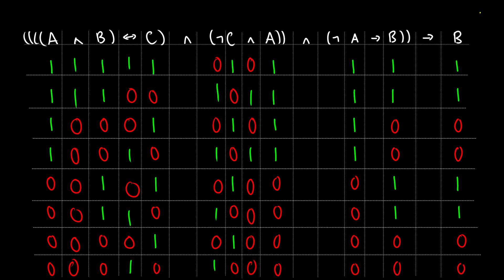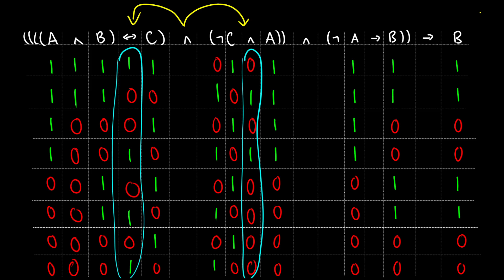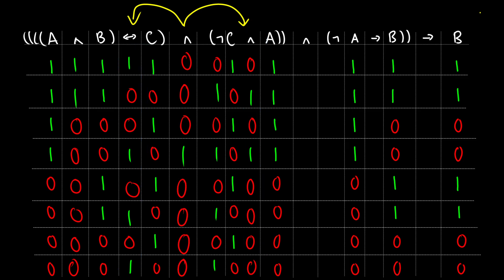Now we have our first two premises done. Joined by and, we can take a look at the truth value. We get the column from the if and only if and the column from not C and A. Because it's and, it's true only if both of those are true. Just putting a little circle around what we're looking at, since we have a lot of numbers. Row one: one zero gives us zero. Row two: zero one gives us zero. Row three: zero zero gives us zero. Row four: one one gives us one — so we do have a true row here. Then in rows five through eight, we have zeros for not C and A, so this whole thing will be zero.